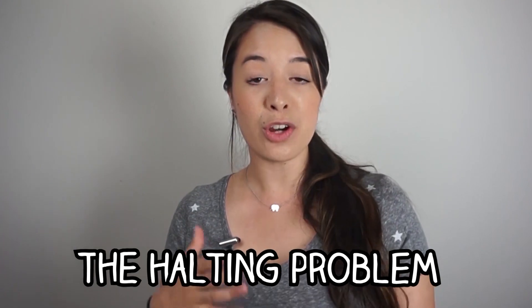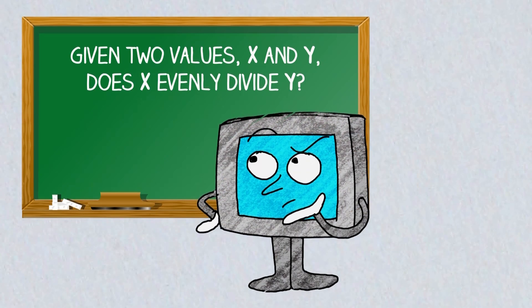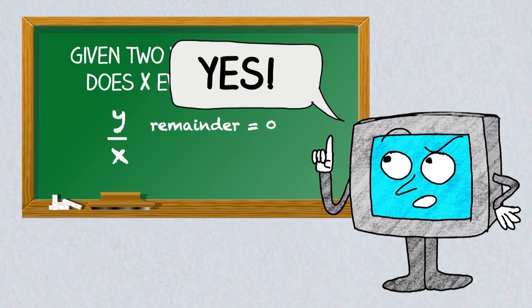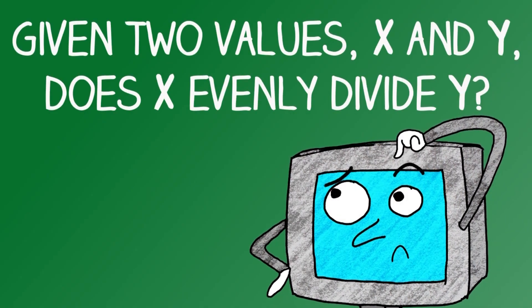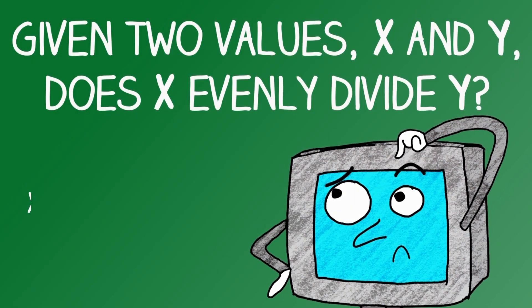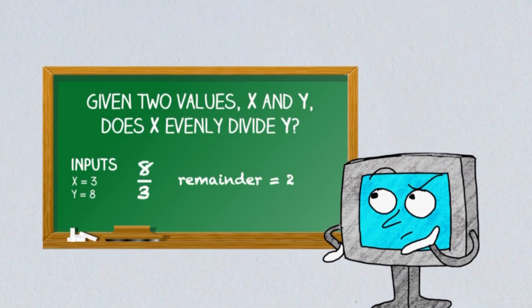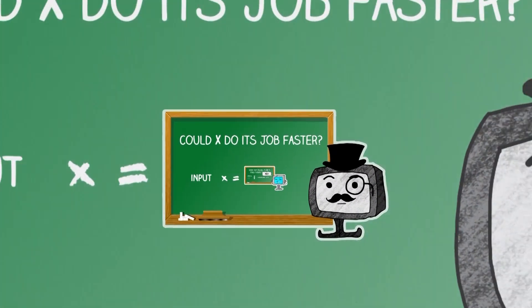To understand it properly, we first need to talk about programs and inputs. A program is just a sequence of instructions written in a language that a computer can understand. For example, for the question 'given two values x and y, does x evenly divide y?' we can write a program that takes y and divides it by x. If the remainder is zero, the program returns yes; if the remainder is anything else, it returns no. The question doesn't make sense unless we give it some values for x and y — these are called the inputs — and programs will behave differently given different inputs. Some more complicated programs can even have other programs as inputs, and some can even have themselves as inputs.